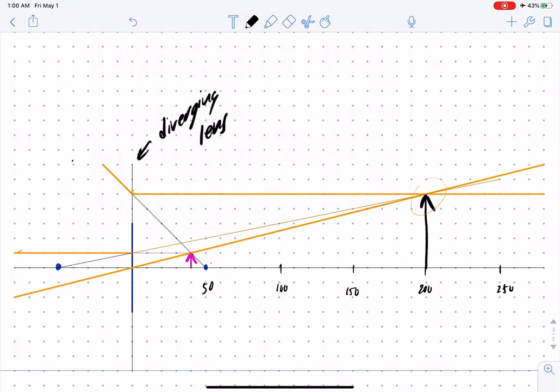The moral of the story is there's really nothing new. You just have to be careful with the plus and minus signs and do one lens at a time.